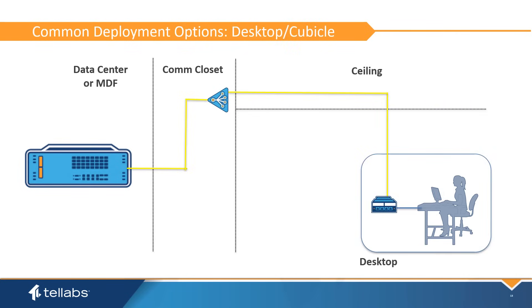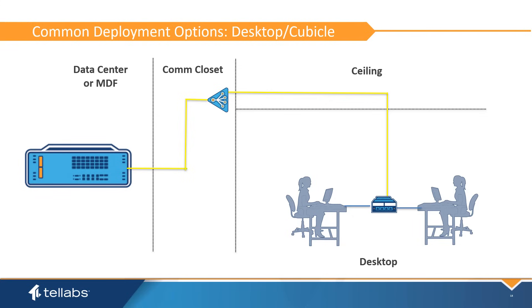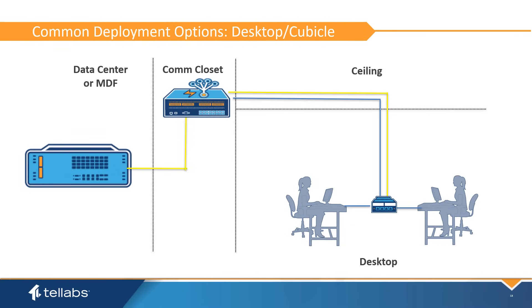In a desktop deployment, the fiber is installed all the way to the Ethernet endpoint. A desktop installation provides the lowest CAPEX solution, assuming ONT sharing. ONTs can either be powered locally at the desktop or by a power distribution unit using composite cable or reusing CAT-X cable. The desktop or cubicle deployment provides the deepest fiber installation with a minimum of copper, and is typically used in a trusted environment.